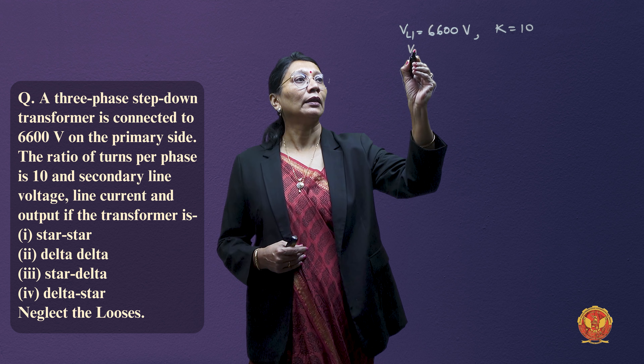Since we have voltage and current, we can calculate the rated power. The input power on the primary side is given by P = √3 × VL × IL volt-amperes. So, √3 × 6600 × 25 × 10⁻³ gives us a KVA rating of the transformer as 285.79 KVA. This is the first step.